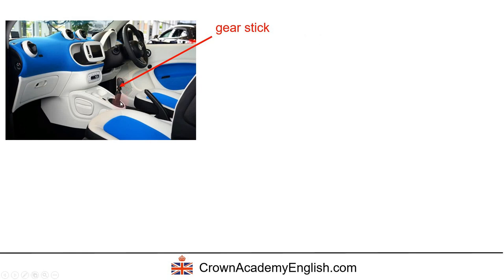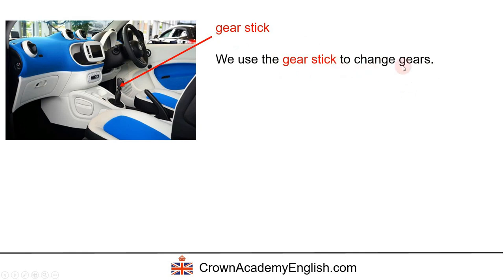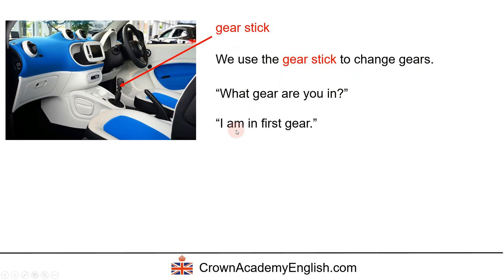This is called the gear stick, and we use the gear stick to change gears. So we use the clutch pedal and the gear stick to change gears. We can ask the driver: what gear are you in? And the driver can reply, for example: I'm in first gear. Or even simply: I am in third — it doesn't need to say the word gear because with context we understand. So we can say I'm in third, or I'm in reverse.